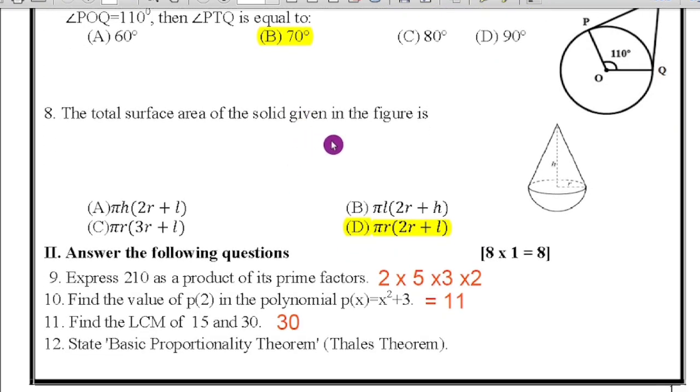Eighth question: the total surface area of the solid given in the figure. This is the frustum of a cone. They are asking the total surface area. Therefore the answer is πR(2R + L). So this is the formula.